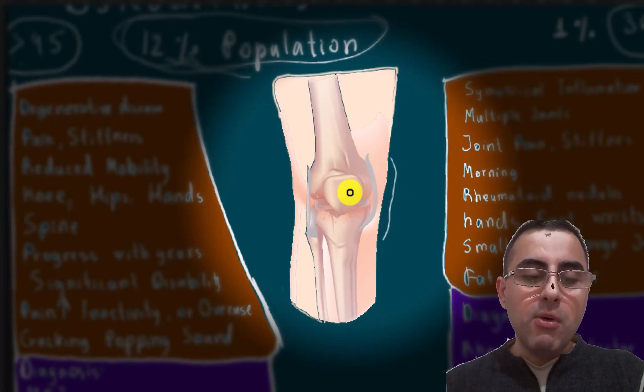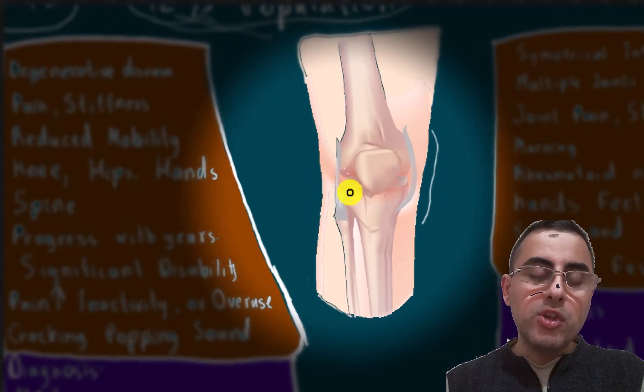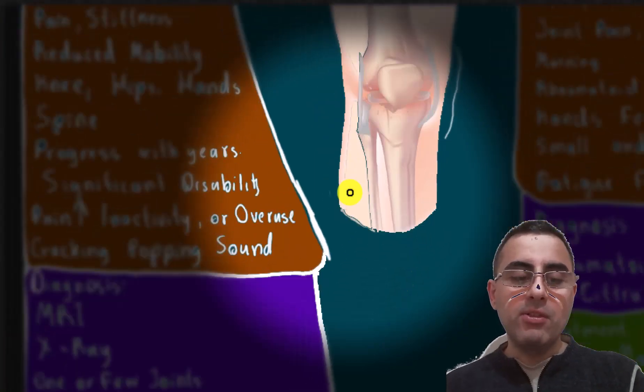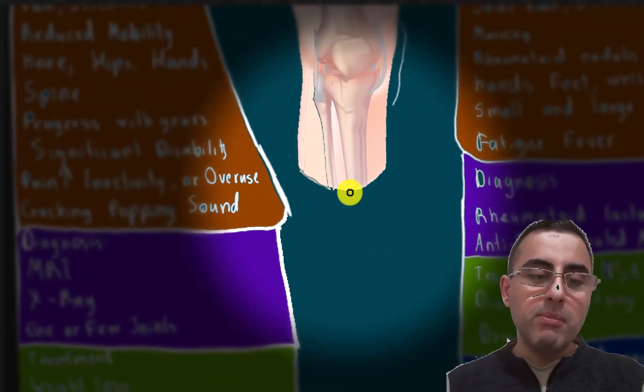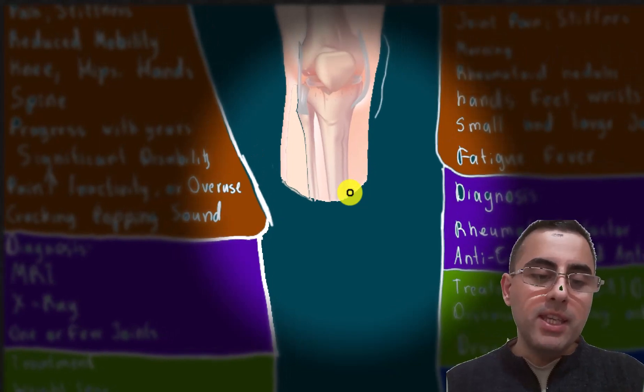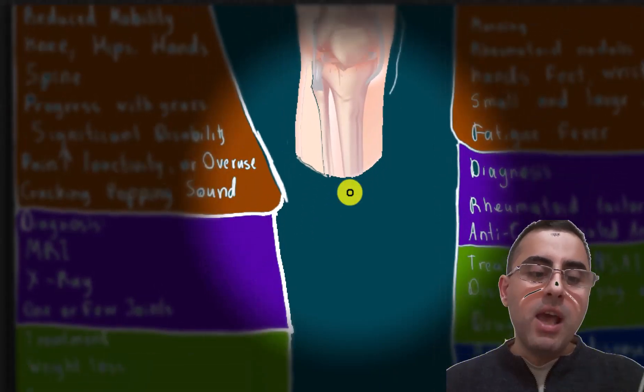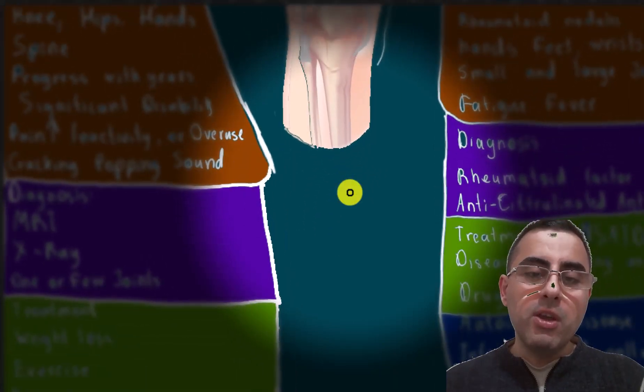During joint movement, cracking or popping sounds are also common and can be a distinctive sign. Diagnosis is made by MRI, x-ray, and based on symptoms. Usually osteoarthritis affects one joint or several joints, so generally it doesn't affect multiple joints.